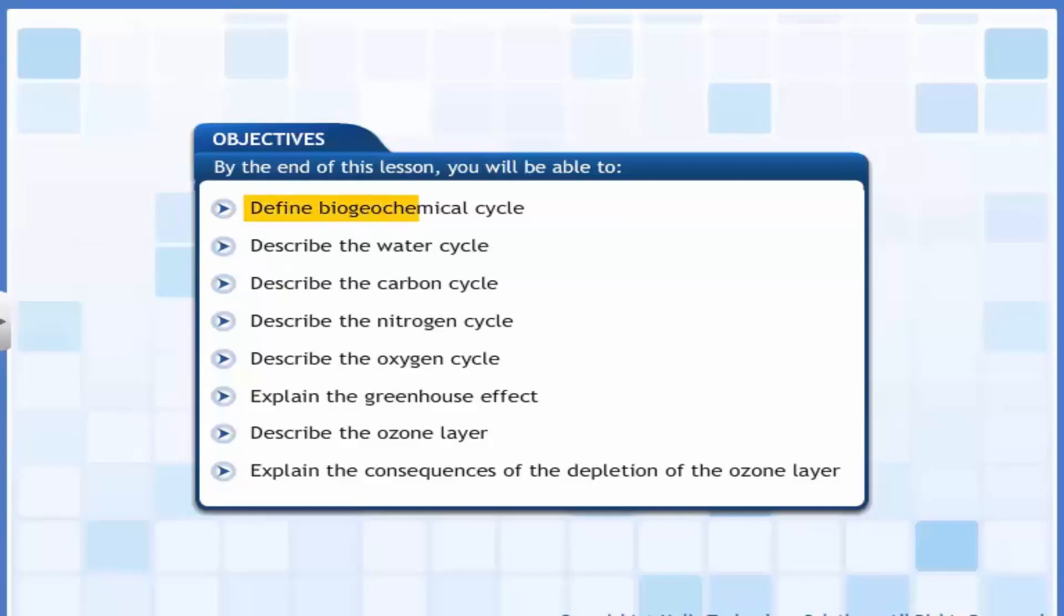Define biogeochemical cycle, describe the water cycle, describe the carbon cycle, describe the nitrogen cycle, describe the oxygen cycle, explain the greenhouse effect, describe the ozone layer, and explain the consequences of the depletion of the ozone layer.